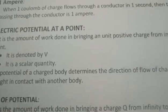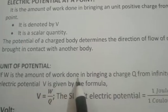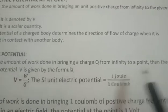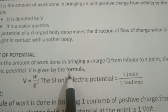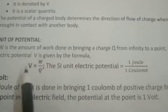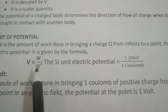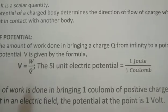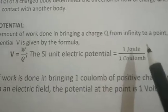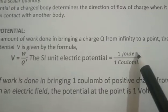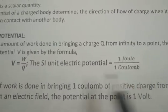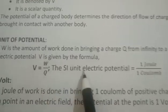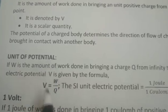If W is the amount of work done in bringing a charge Q from infinity to a point, then the electric potential V is given by the formula V = W / Q, where W is the work done and Q is the charge. The SI unit of electrical potential is obtained as one joule per one coulomb. The work should be expressed in joules and the charge in coulombs — only then can we express the potential in volts.